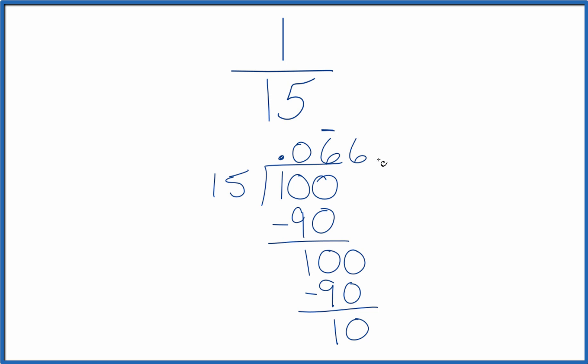So we can just put a bar over it here like that, get rid of this 6. And in answer to our question, when we write 1 15th as a decimal, we end up with 0.06, and that 6, it just keeps repeating.